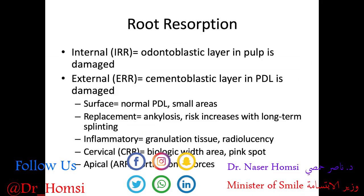Here's a brief review of root resorption. We have internal root resorption, where the odontoblastic layer in the pulp is damaged, and external root resorption, where the cementoblastic layer in the PDL has been damaged. Pathologic root resorption can certainly happen if a patient experiences a traumatic dental injury. There are various forms of external root resorption: surface replacement — essentially ankylosis — inflammatory, cervical, and apical. These are nice definitions to know for the board exam.